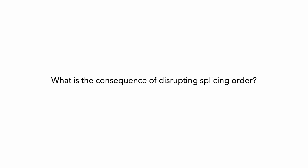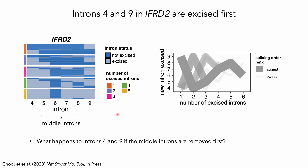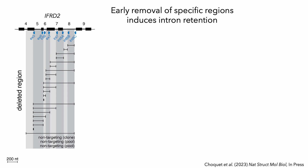Earlier I told you that splicing order is largely consistent between different cell types and alternative isoforms. So next we wanted to understand what is the consequence of disrupting splicing order. To answer this question, we focused on a group of 6 introns in the gene IFRD2, in which we saw that introns 4 and 9 are typically removed early, prior to the introns located between them, which I'll refer to as the middle introns. We asked what would happen to removal of introns 4 and 9 if we reversed splicing order such that the middle introns were instead removed first. It's actually quite challenging to force early splicing, so instead we used CRISPR-Cas9 to introduce a series of deletions in the genomic locus of IFRD2.